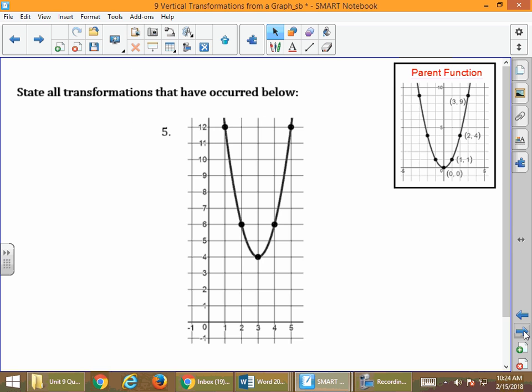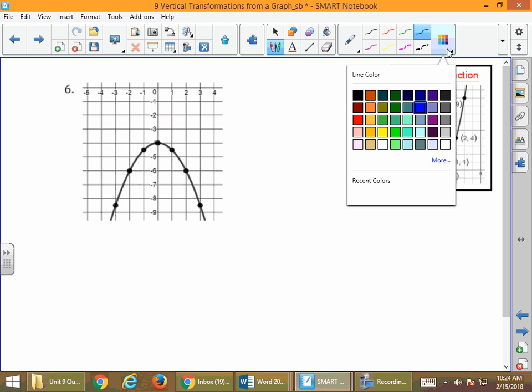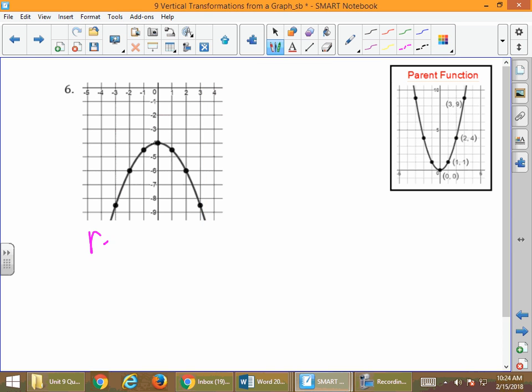I'm going to skip number 5 and skip over here to number 6 here to finish. As we take a quick look at this one, there's two transformations happening. And probably the most notable is the first one. Do you know what it is? It's a reflection. We're going to reflect over the x-axis.